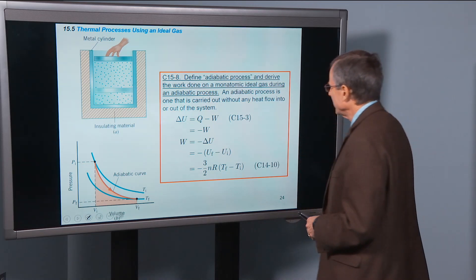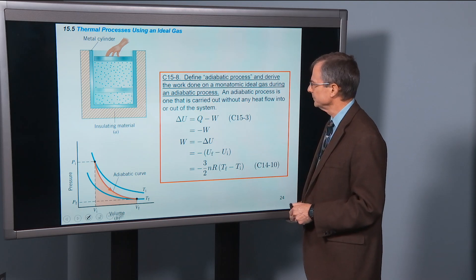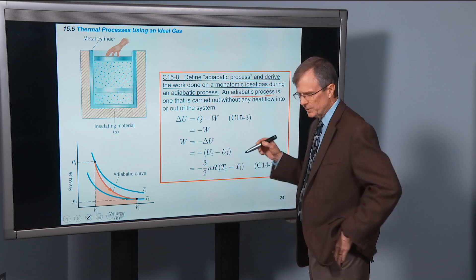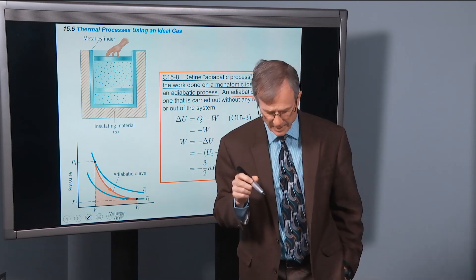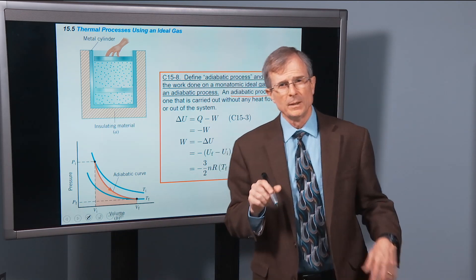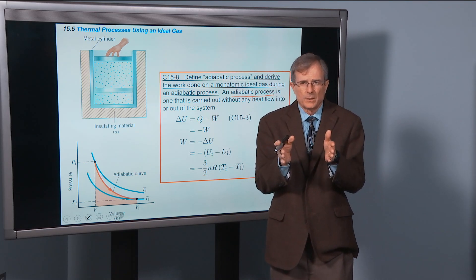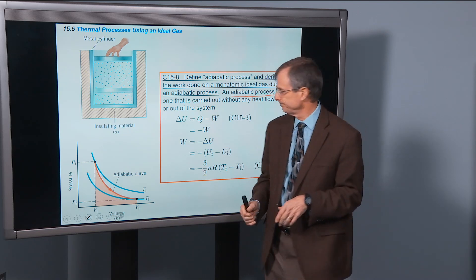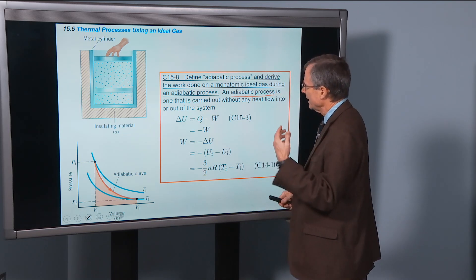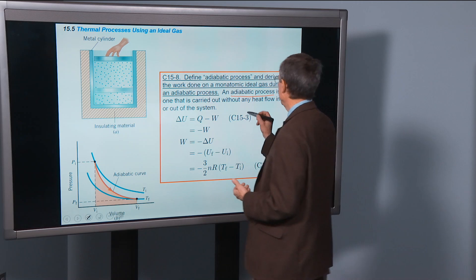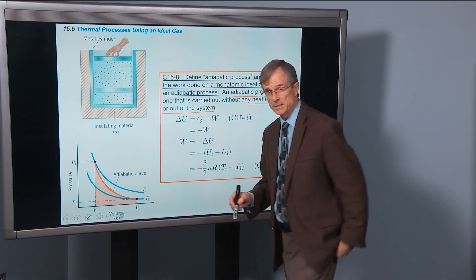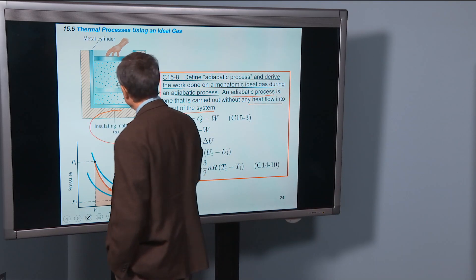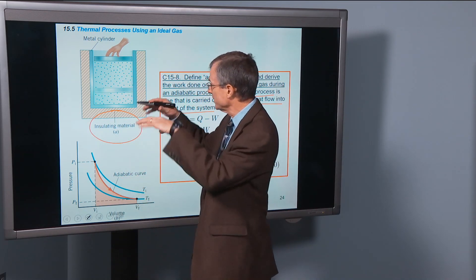Let's talk about an adiabatic process. So this relates to the adiabatic walls that we talked about. Adiabatic walls are walls that don't allow heat to flow through them. So well insulated. An adiabatic process is one that's carried out without any heat flow. So same idea as adiabatic walls.